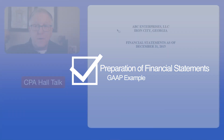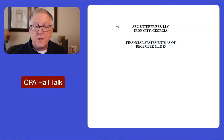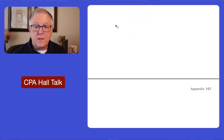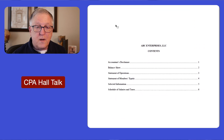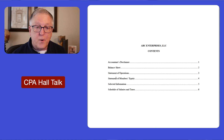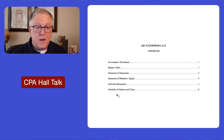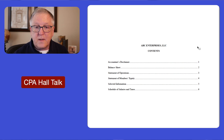We start with the cover sheet, and then let's go to the table of contents. It looks like this. We can see that there's going to be a disclaimer, a balance sheet, statement of operations, statement of members' equity, a selected disclosure, and then a schedule of salaries and taxes.